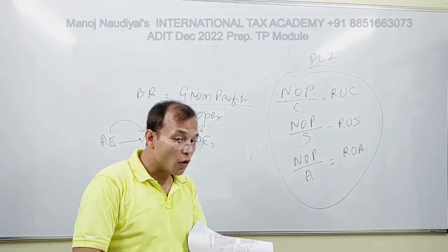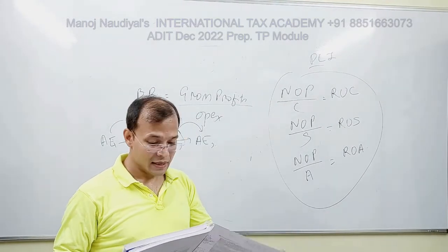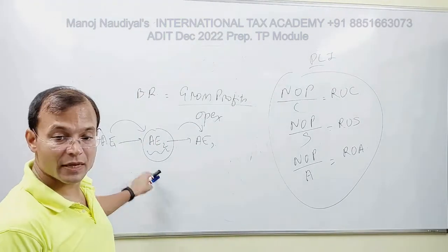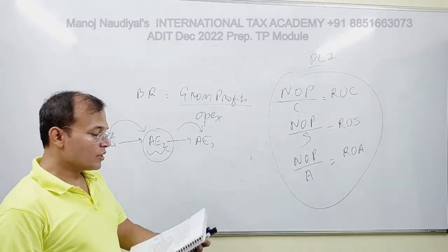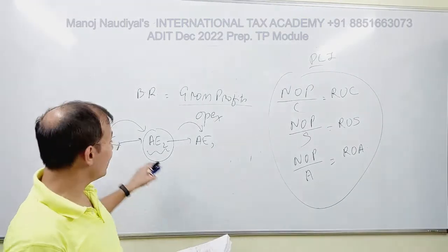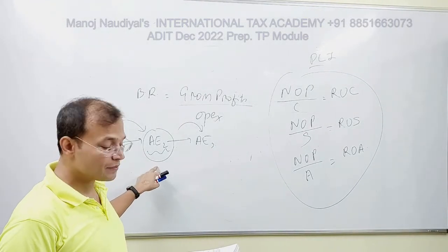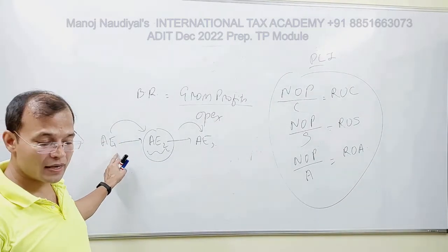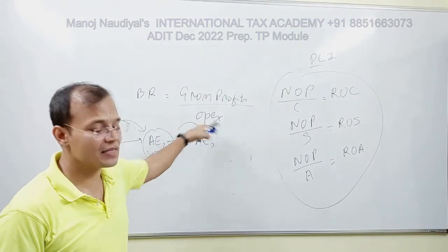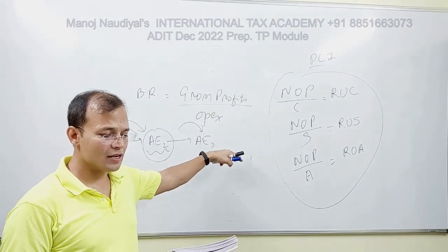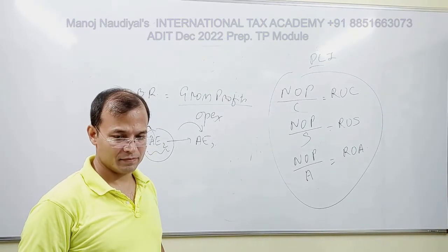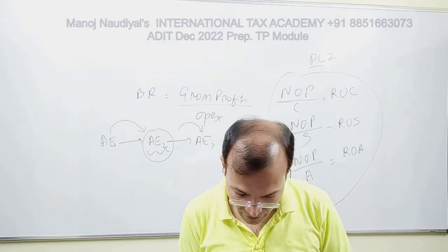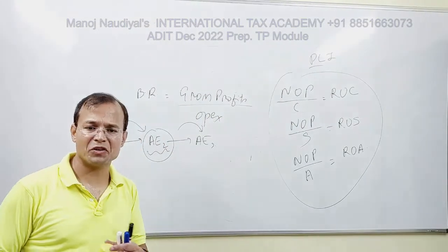And now paragraph 2.108 gives an example. A situation where Berry Ratio can prove useful is for intermediary activities — where a taxpayer purchases goods from an AE and resells them to other associated enterprises. So in this case, you can apply Berry Ratio. The concept and the application are clear.